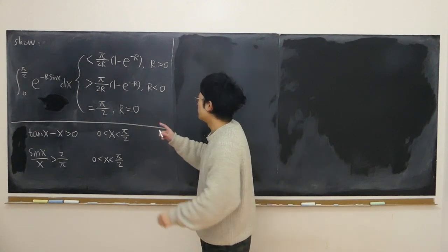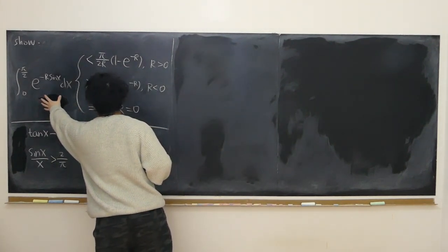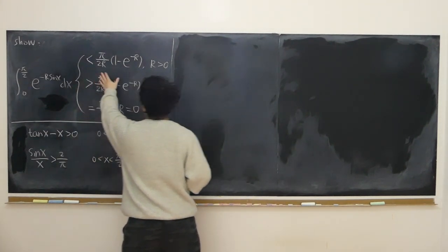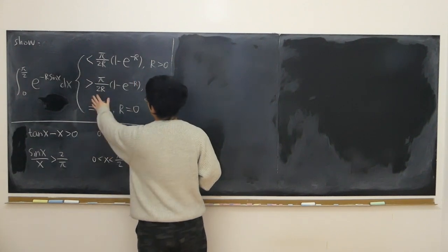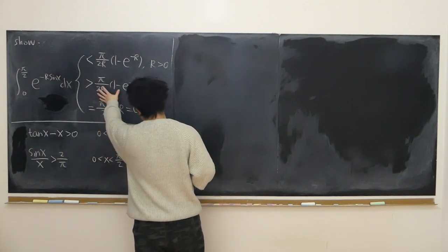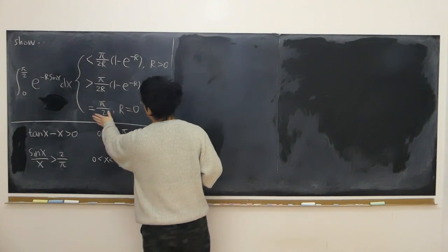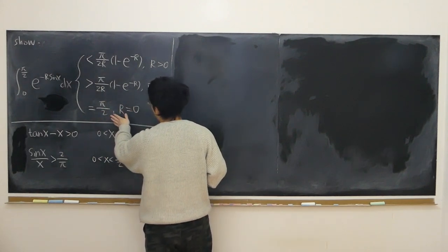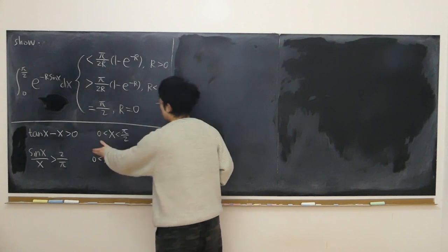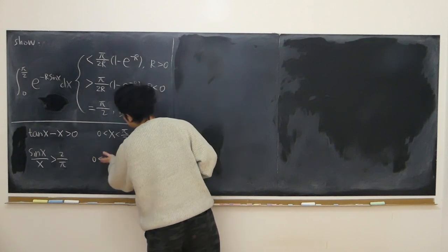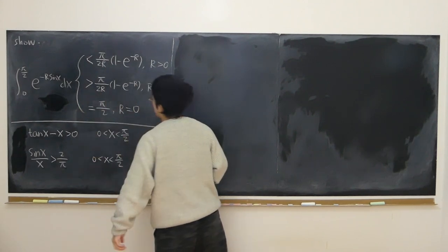We're asked to prove that this integral is always less than this quantity when r is positive, and always larger than this quantity when r is negative, and is equal to half pi when r is equal to zero. We're going to prove these lemmas to help us show the desired result.